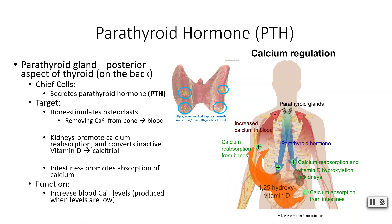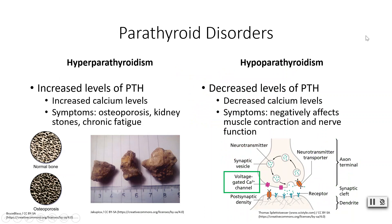Calcitonin and parathyroid hormone are basically antagonists — one raises blood calcium levels, the other drops them back to normal. Hyperparathyroidism means too much PTH in the blood, which elevates blood calcium but at a cost. Continuously breaking down too much bone leads to osteoporosis. You can also end up with kidney stones, since some are made of calcium, and chronic fatigue.